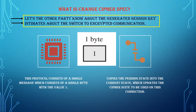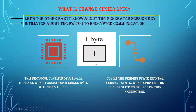Change Cipher Spec is actually simple — it consists of a single message, and that single message will have only a single byte value called one. This value causes a copy of the current state to be made, which updates the cipher suite, and based on that, the value at the particular block keeps on updating. So the pending state will be moved to the current state with all the updated values.